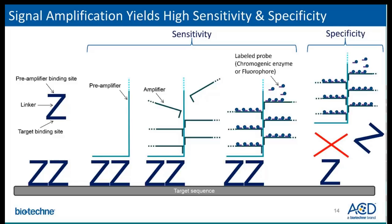If a single Z binds to the target mRNA transcript, the pre-amplifier cannot bind as it needs both Z-Z pairs to provide a binding site. This helps to ensure the specificity of the probe and helps reduce potential background staining.